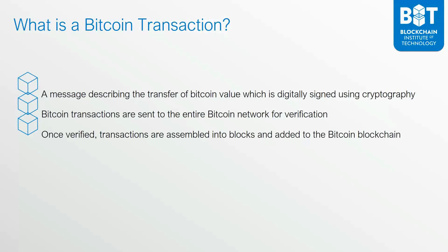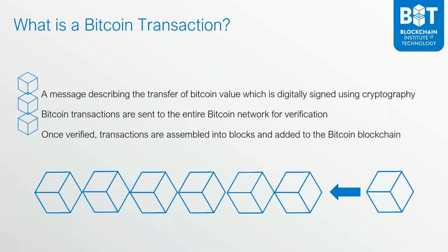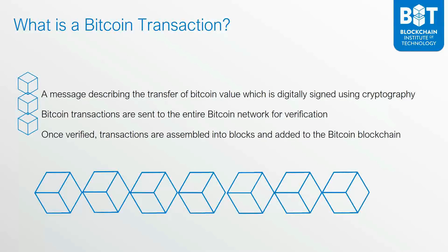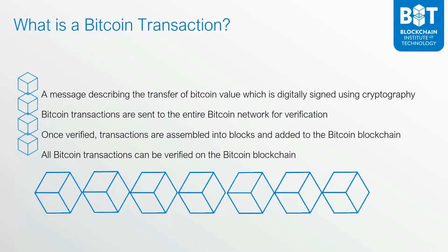Once the transaction is verified, these transactions are assembled into blocks and they are added to the Bitcoin blockchain. Each transaction gets added into the block and becomes a permanent part of the Bitcoin blockchain. Because of this, all Bitcoin transactions can be verified on the Bitcoin blockchain. It is important to note that there are multiple transactions per block, and the miners cluster together groups of transactions into blocks.